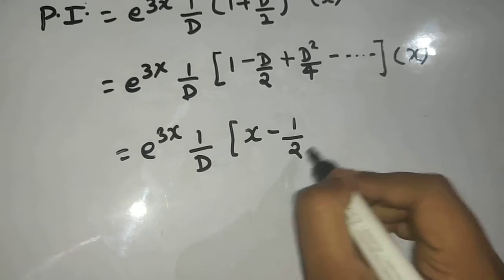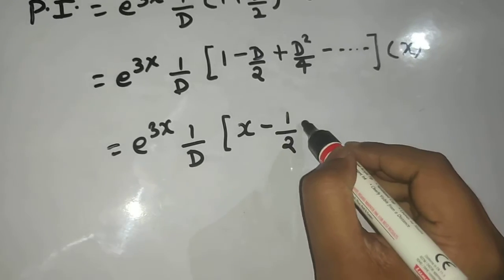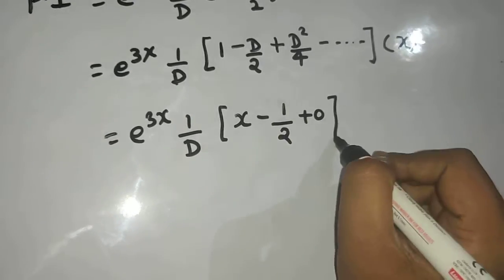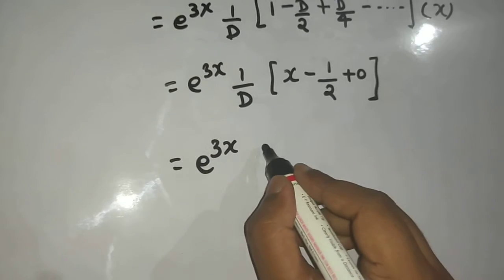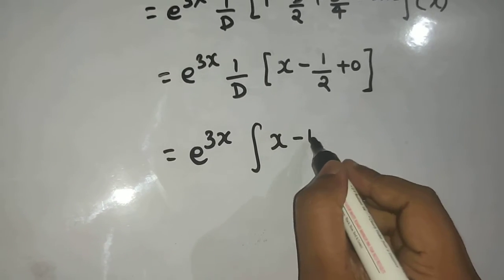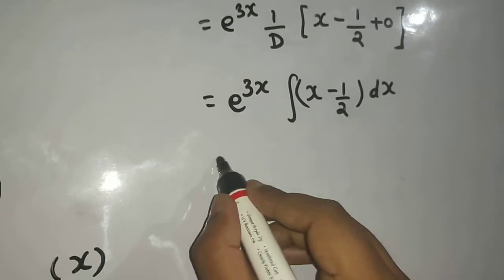Now second derivative of x is anywhere 0, so I will write plus 0. So e power 3x, 1 upon d is nothing but the integral. So x minus 1 by 2.